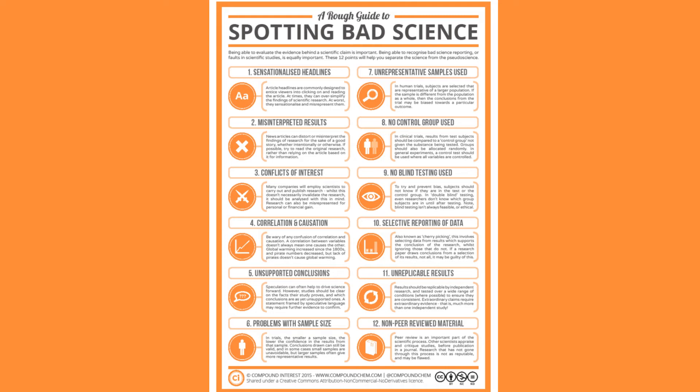Selective reporting of data — often referred to as cherry picking — is when you only present data that supports your conclusion and ignore data that contradicts it. Unreplicable results happen when you just can't reproduce the experiment. Peer review is a critical part of the scientific process: before work gets published in a peer-reviewed journal, other expert scientists examine it, often catching problems with experimental design or interpretation of results.